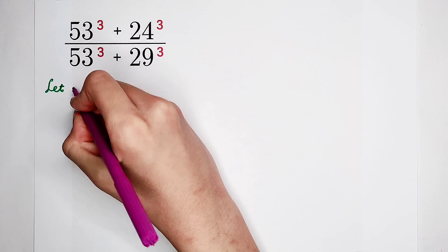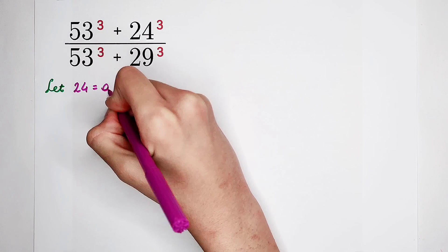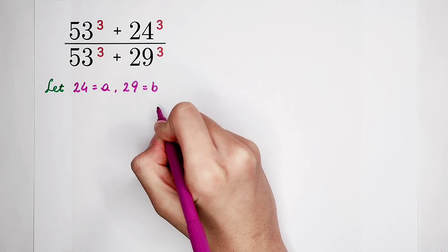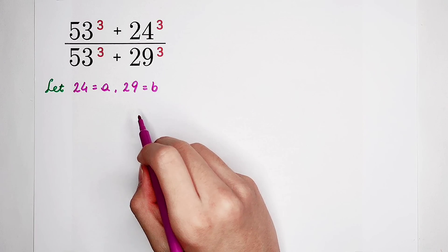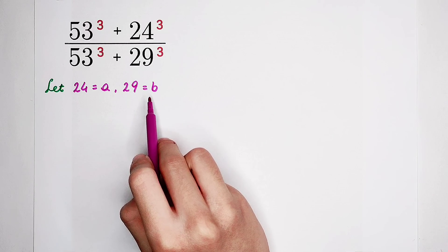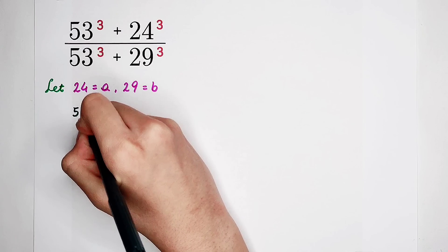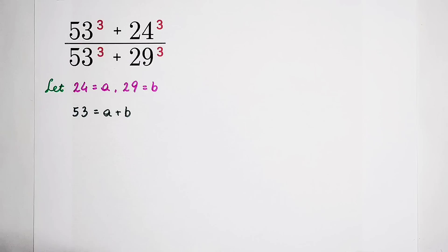So let, you can let 24 equal to a, and 29, it is b. Of course, and what else, 53, 53 is the addition of a and b. So now, 53, it is a plus b. Very, very good. Substitute them back into our fraction.